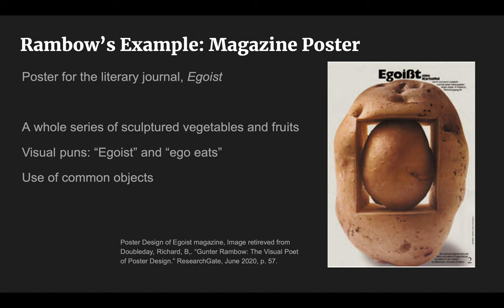This is a poster created for a popular British literary magazine containing many famous authors' work, called Egoist. It is a play on visual puns. Rimbaud created a series of posters using fruits and vegetables, playing with the words 'Egoist' and 'EgoEats.' The use of common elements, such as a potato, conveys the idea that ordinary or non-artistic objects can be art subjects.